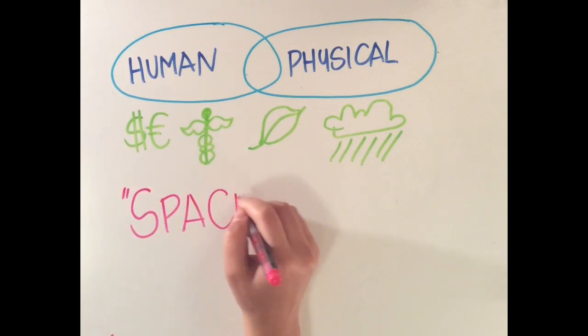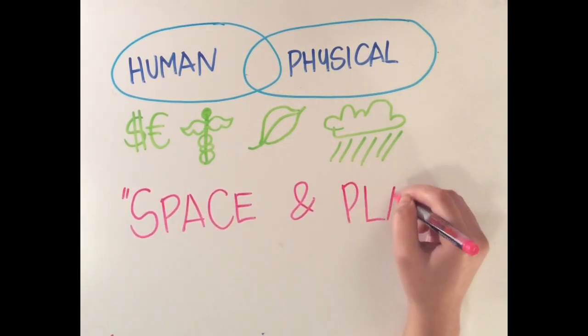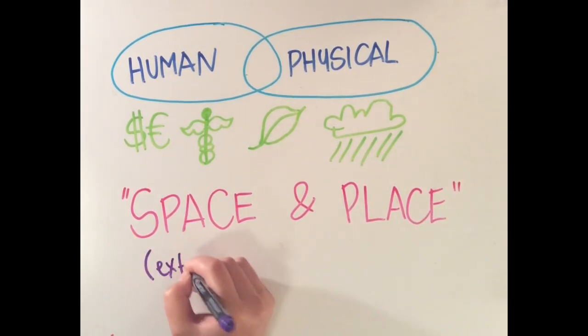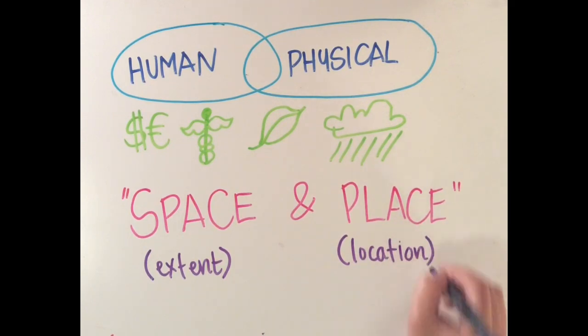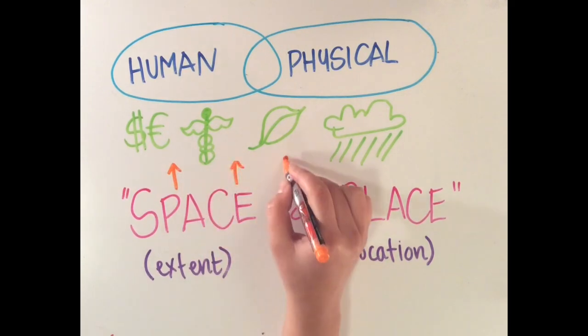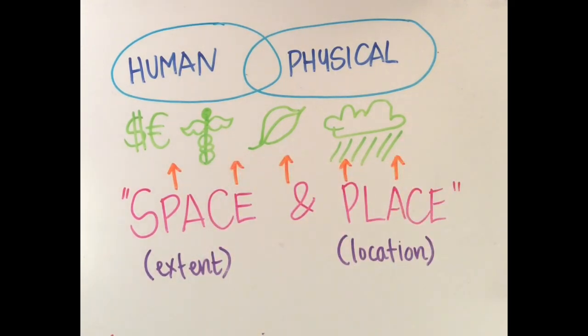A famous geographer named Ifu Tuan stressed the importance of space and place in geography—the spaces across which phenomena stretches and the places at which things exist around the world. Geography studies anything and everything and analyzes the effect that their locations and extent have on those events or features.